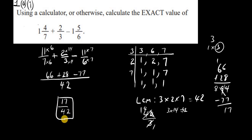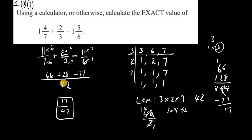There might be some different methods I used, for example, calculating the LCM using the division method. There are several other ways — we could have simply written out the multiples of 7, multiples of 3, and multiples of 6, then looked at the lowest common one, and we would have gotten 42 the same way.